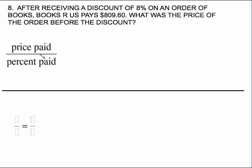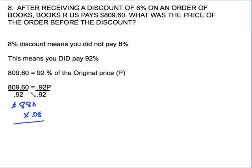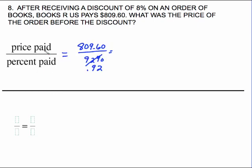Here's something you can memorize for any problem where you're going backwards to find the original price: it is just the price paid divided by the percent paid. The price paid is $809.60. The percent paid is not the 8% — that was what you did not pay. You did pay 92%, which you rewrite as the decimal 0.92, and that gives you the same answer.